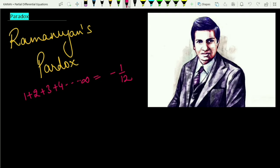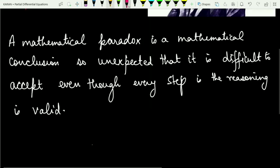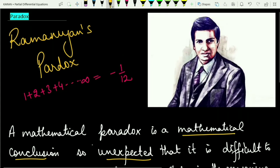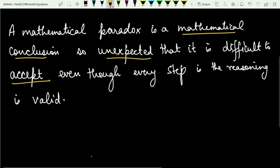Before we proceed, let us first understand what is the mathematical meaning of a paradox. A mathematical paradox is a mathematical conclusion so unexpected that it is difficult to accept — just as I said that 1 plus 2 plus 3 and so on to infinity gives you something negative. Even though every step in the reasoning is valid, the conclusion is still very difficult to digest.